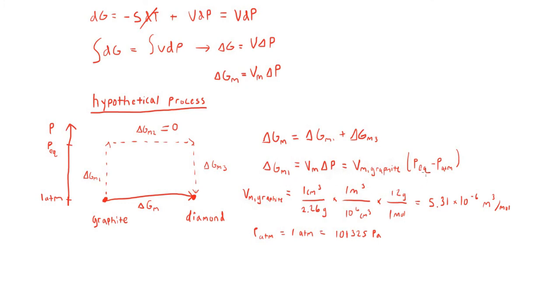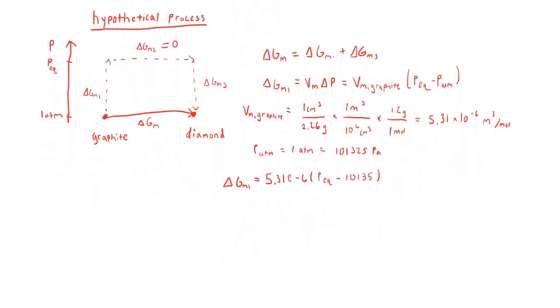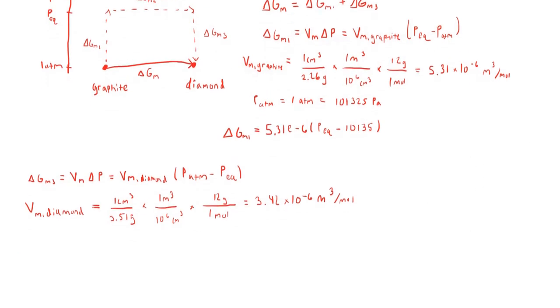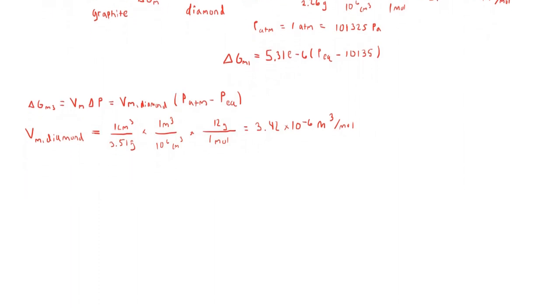Now I'm going to do the same thing for ΔG_m3. In ΔG_m3, diamond is the only species present, and we're changing from the equilibrium pressure to atmospheric pressure, so the ΔP term is going to be P_atmosphere minus P_eq. Again, we don't know the molar volume of diamond, so I'm going to use the density given to calculate the molar volume of diamond. When you do the conversion, you get that the molar volume is 3.42 times 10 to the negative 6 meters cubed per mole, and then we have all the numbers we need, so plug that into the expression for ΔG_m3.